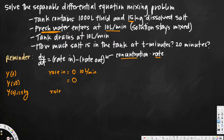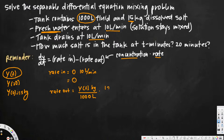For rate out: y(t) is the amount of salt at time t in kilograms, divided by the volume of fluid in the tank, which is 1000 liters — that gives us the concentration, amount divided by volume. We then multiply by the exit flow rate of 10 liters per minute. Canceling liters, rate out equals y(t)/100 kilograms per minute.